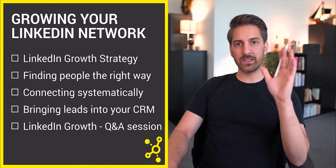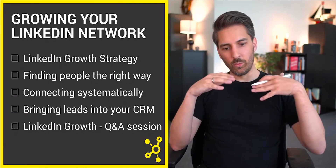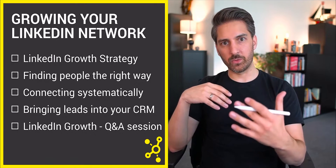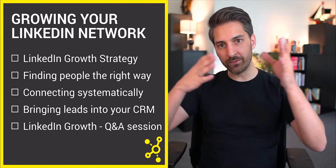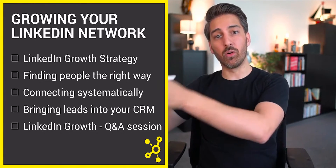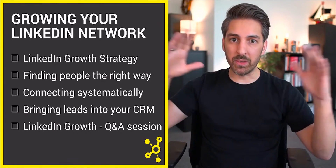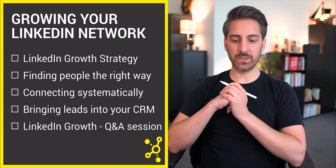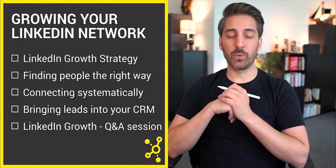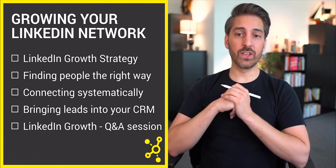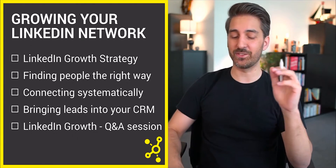That was the last part. So now we have the LinkedIn growth strategy, which consists of finding the right people the right way on LinkedIn, connecting with them systematically, and then following up like a boss by bringing them into your CRM. We've talked a lot about marketing automation in other meetups. If you're interested in what to do once people are in your CRM, we now open up for the Q&A section — which will be the next video in the series if you're watching this after the live stream.